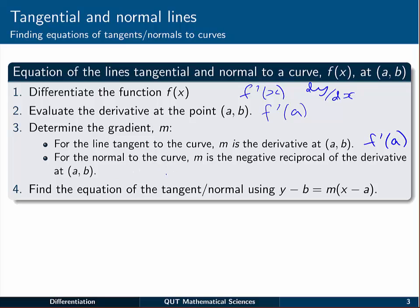For the normal to the curve, m is actually the negative reciprocal of the derivative at (a, b). In other words, -1/f'(a).